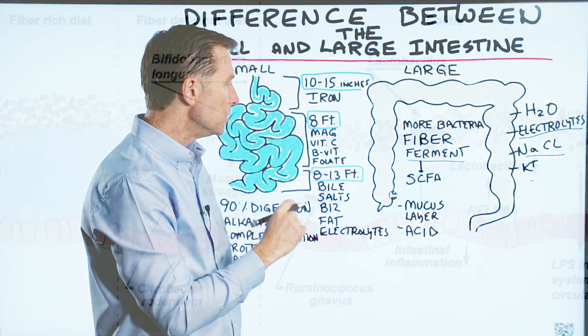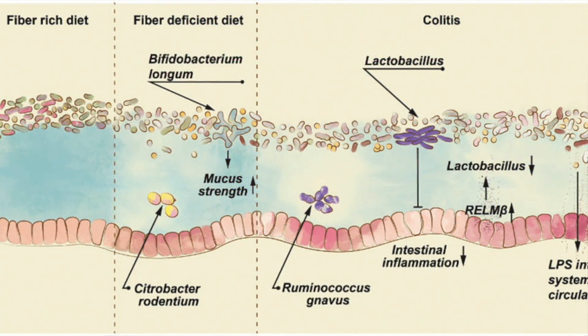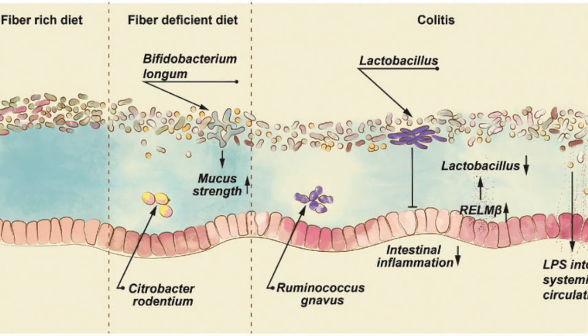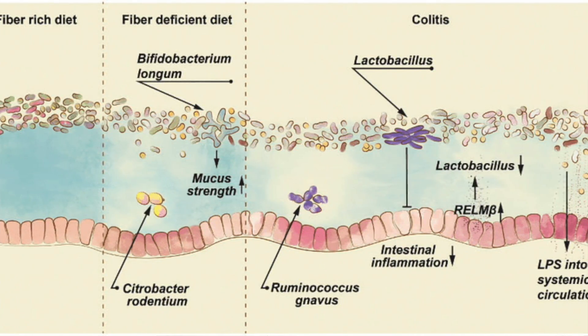You also have a large mucus layer. So if the surface of the colon is right here, we have a layer of mucus, and the microbes are on top of that.